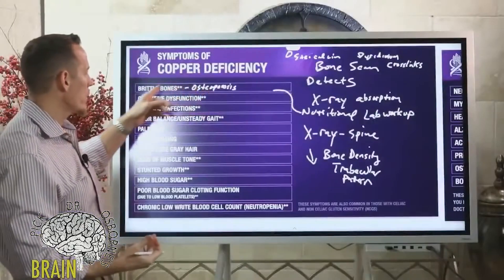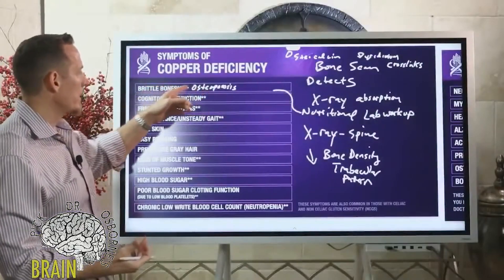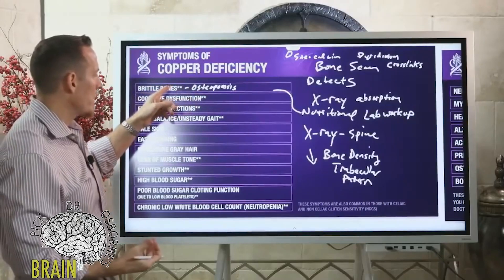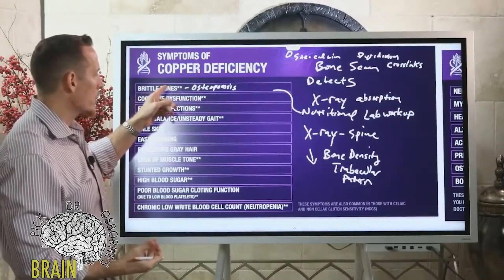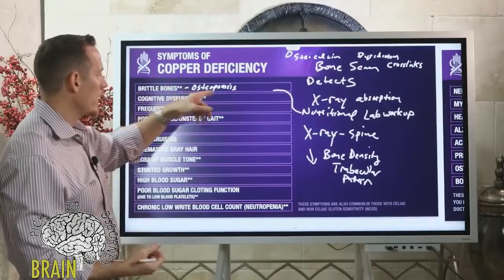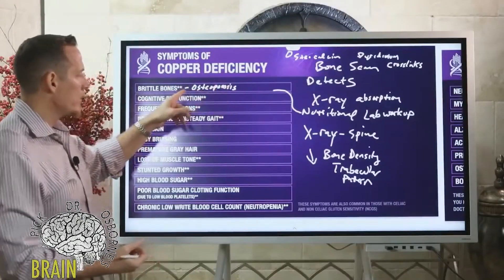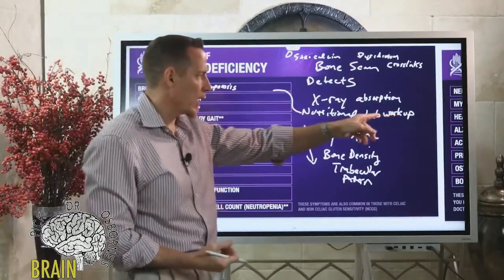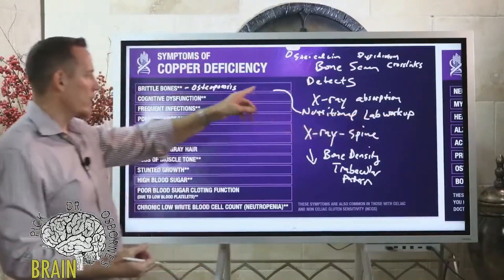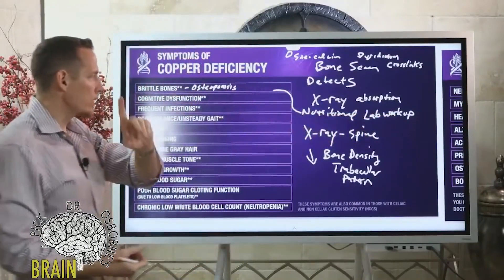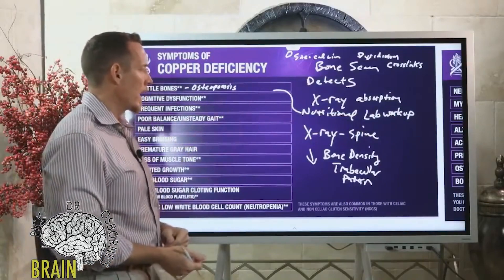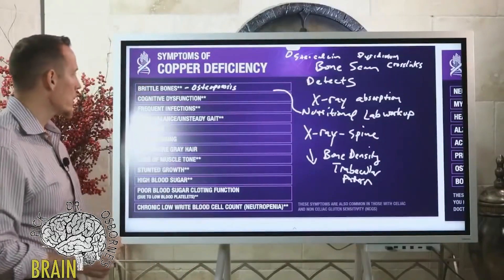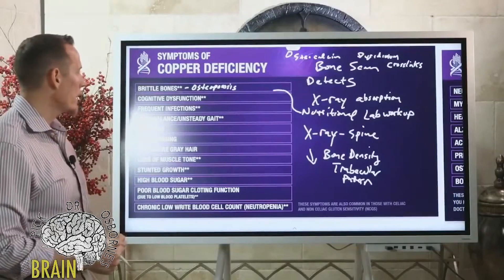If you're suspecting brittleness in the bone, maybe you're prone to fractures even with light falls, this all goes back to nutritional lab workup. Copper is going to play a role in that. We're going to talk about lab testing and how to look for copper deficiency, but cognitive dysfunction is another symptom.